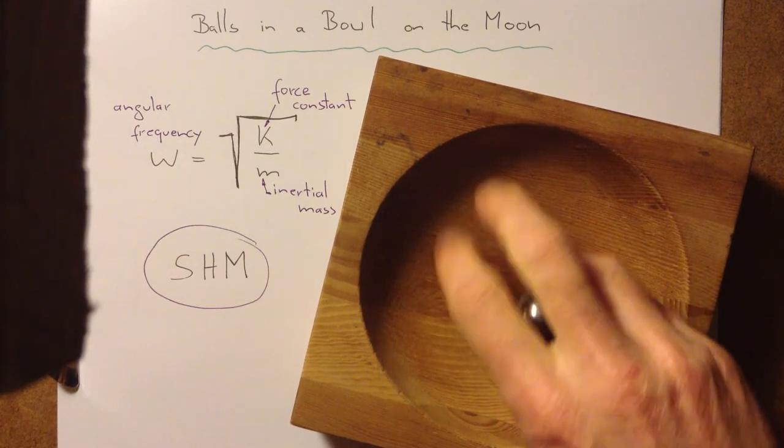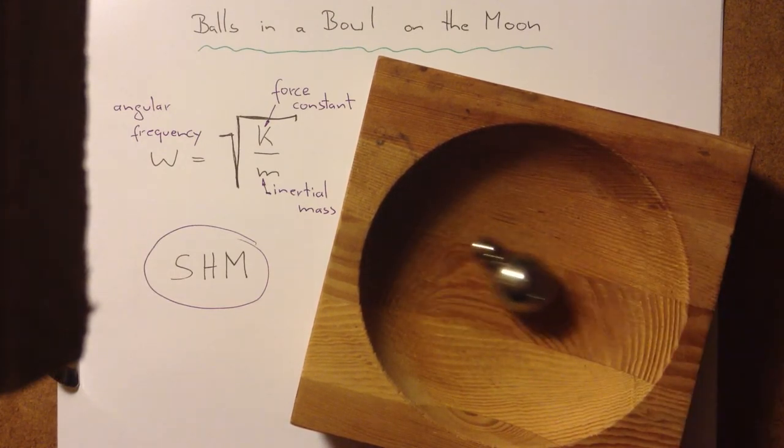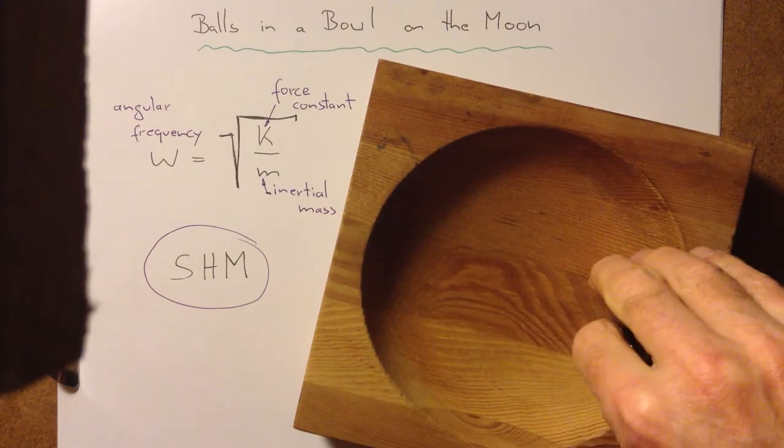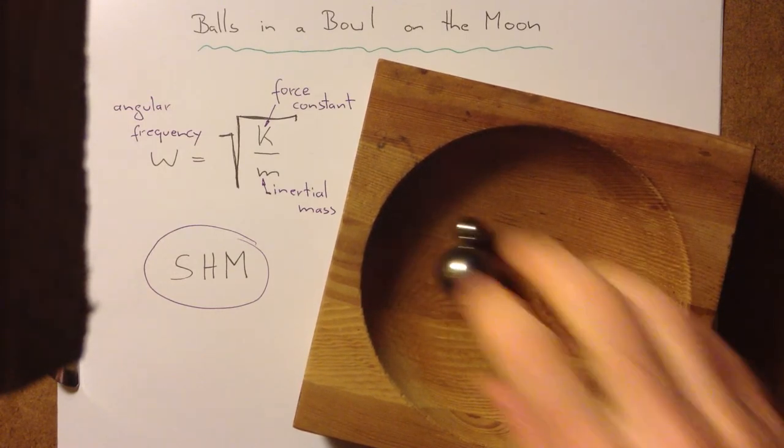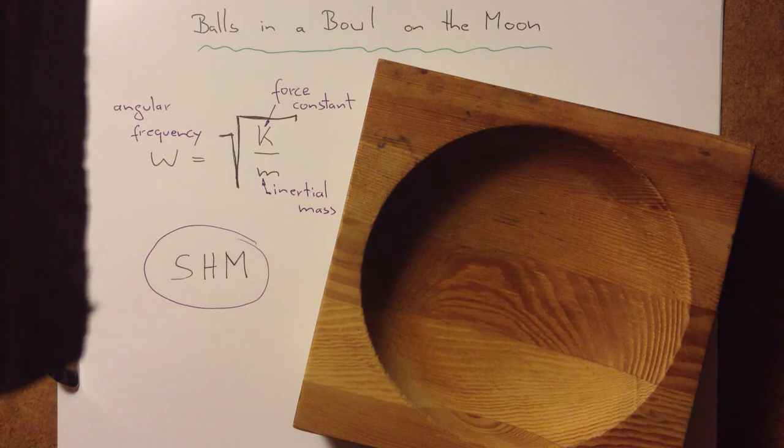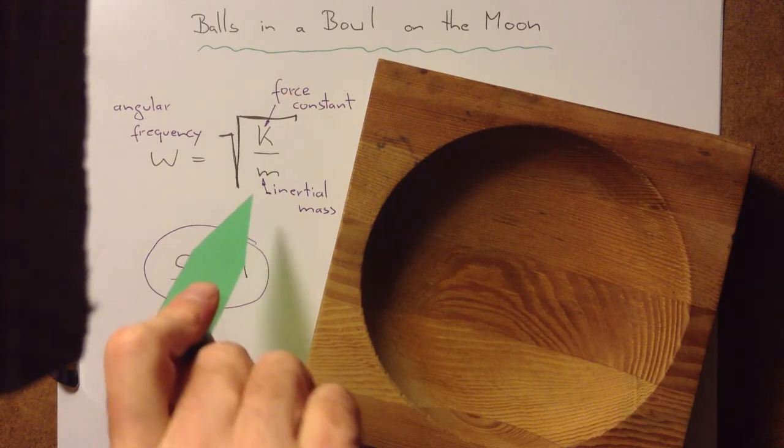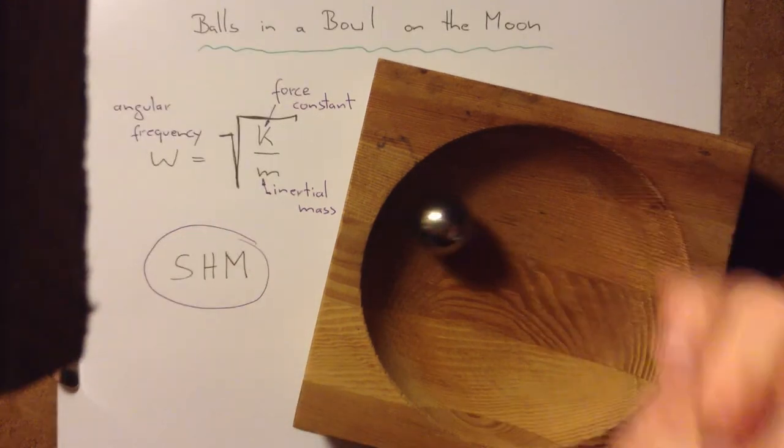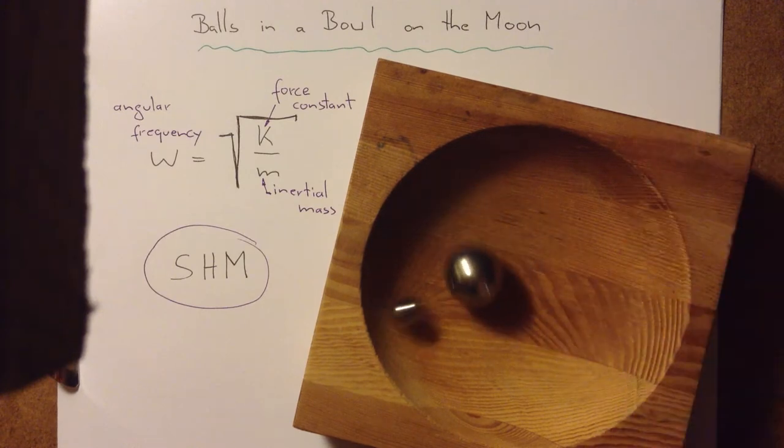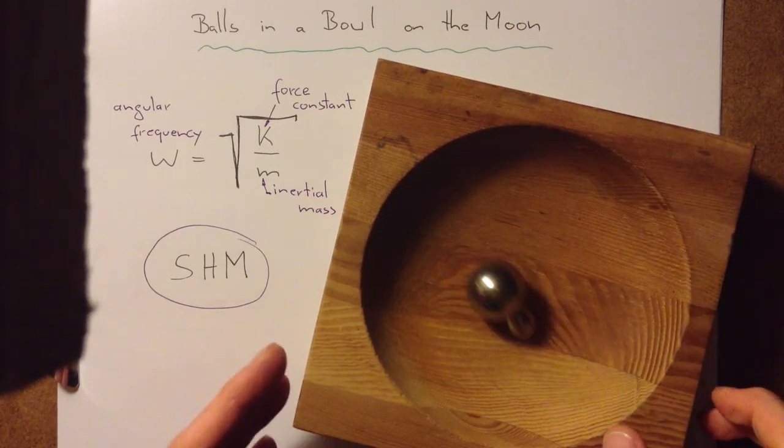But hang on, don't they both have the same frequency? They have. Isn't that a contradiction to what we just said? Frequency depends on mass. The big one is clearly much more massive than the small one. How can we understand this?